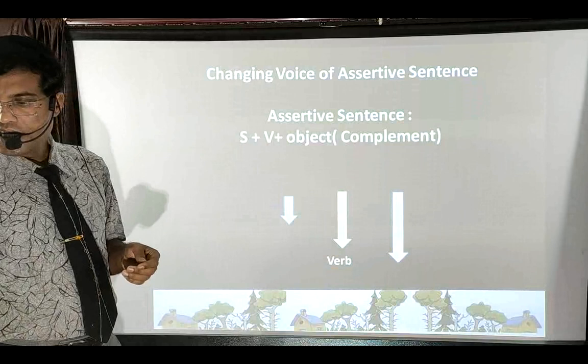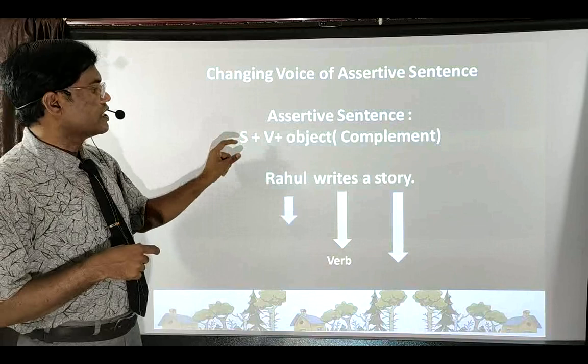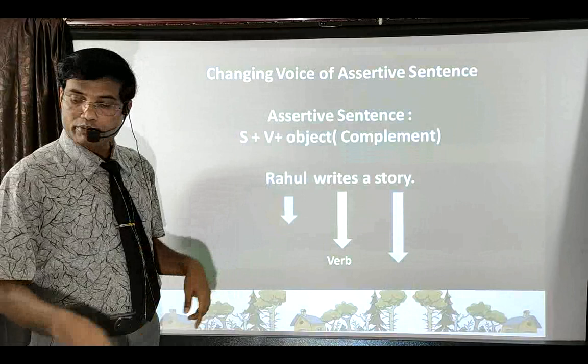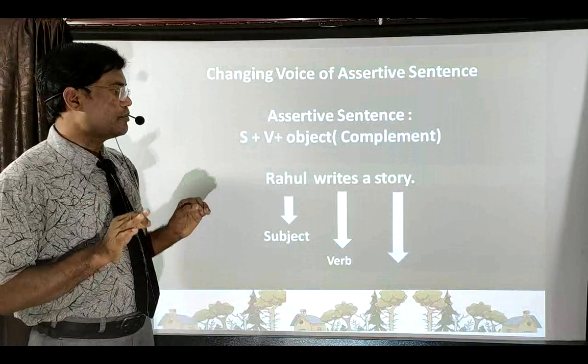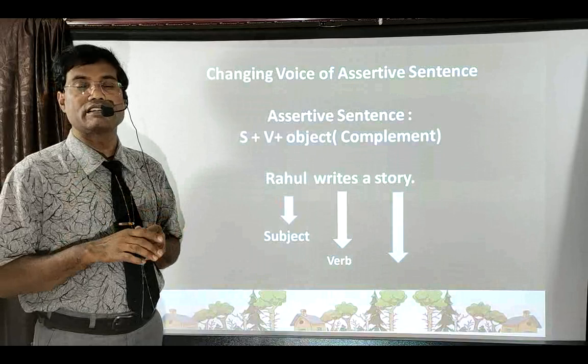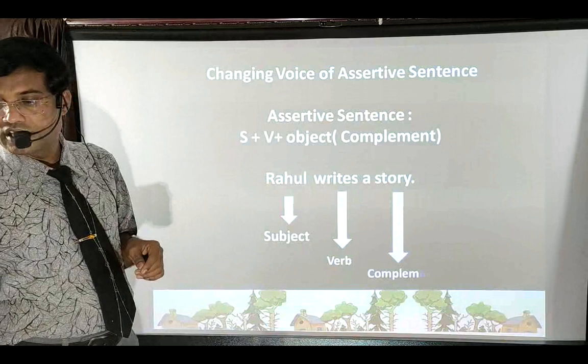According to this formula, sentences are formed with subject first, then verb. Whenever you see a sentence where subject appears first followed by verb, understand that it is an assertive sentence. Another easy way: any sentence whose structure is according to the tense formula — all such sentences are active voice sentences.